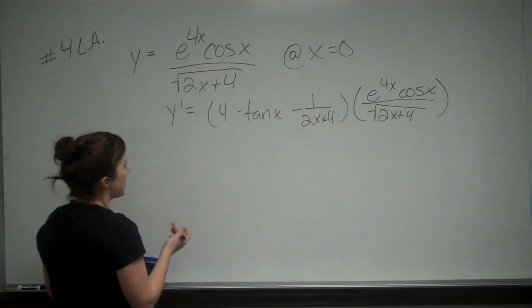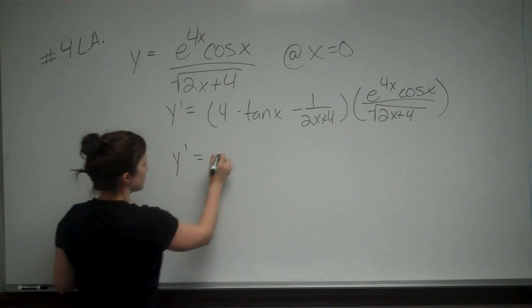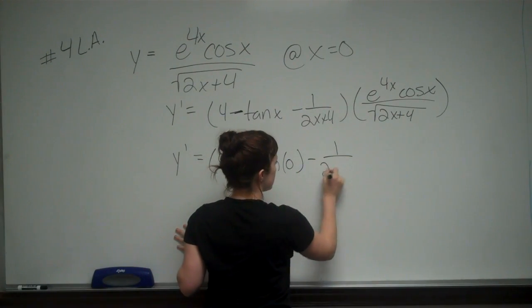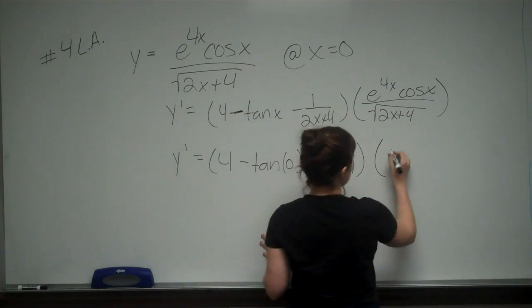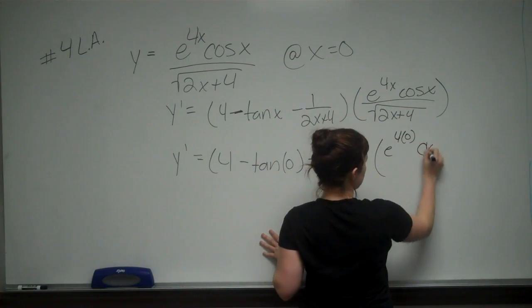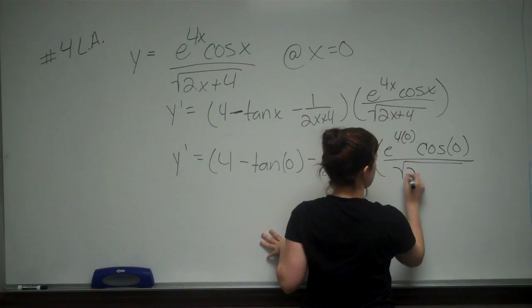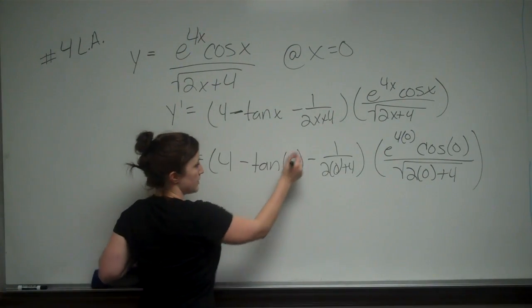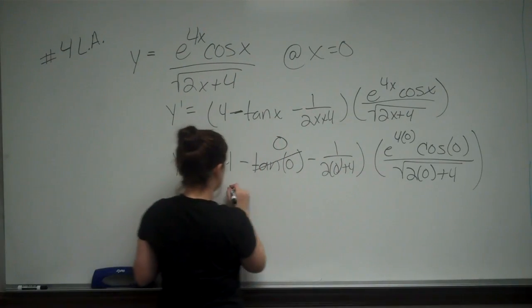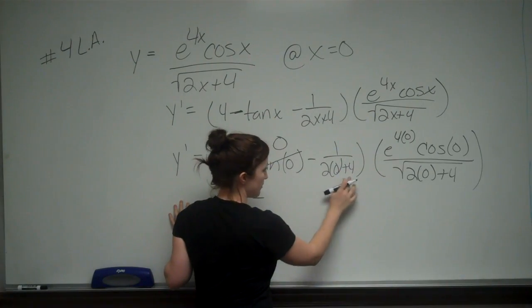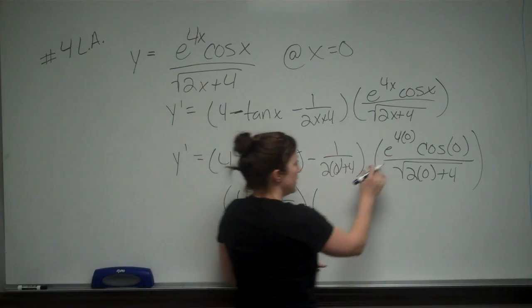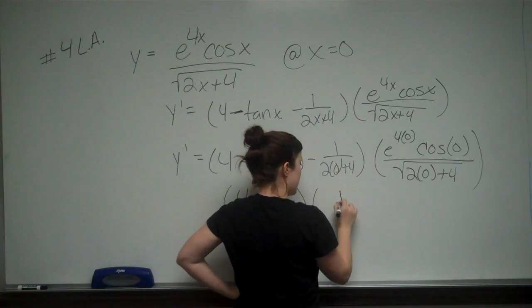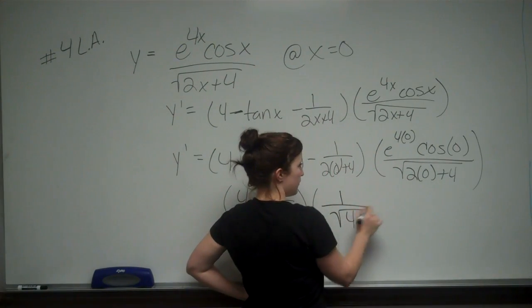We want y prime at x equals 0, so we plug in 0 for x. That gives us 4 minus tangent of 0 minus 1 over 2 times 0 plus 4, times e to the 4 times 0 times cosine of 0, all over the square root of 2 times 0 plus 4. Tangent of 0 is 0, so we get 4 minus 1 fourth. E to the 0 is 1, cosine of 0 is 1, and the square root of 4 is 2, so that fraction equals one half.